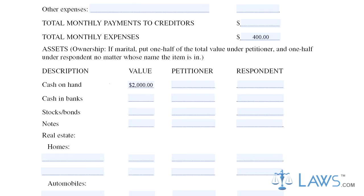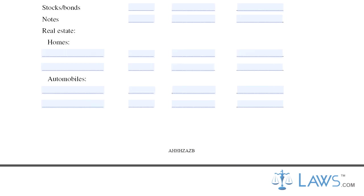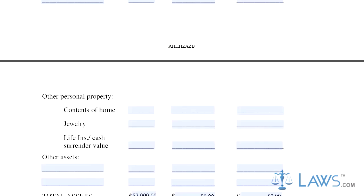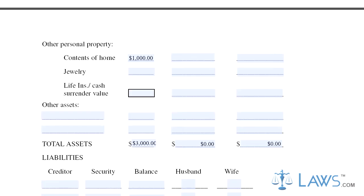Step 5: Below this, list all assets and note its value, as well as whether one or both spouses owns it. Enter half of the value under the columns for petitioner or respondent, if it is marital property.